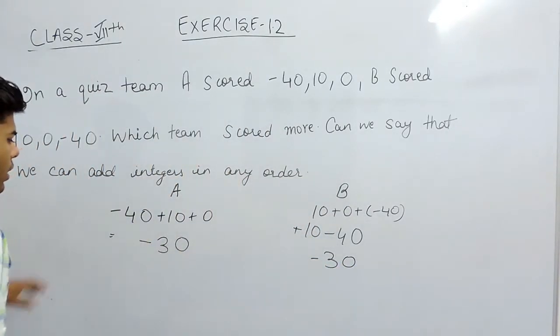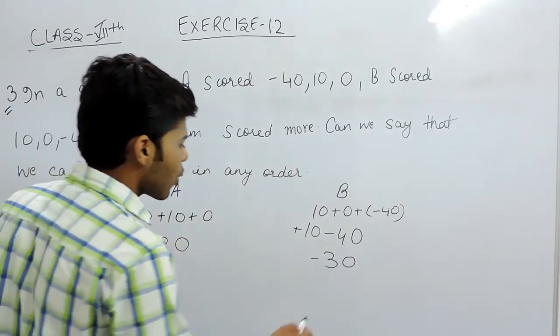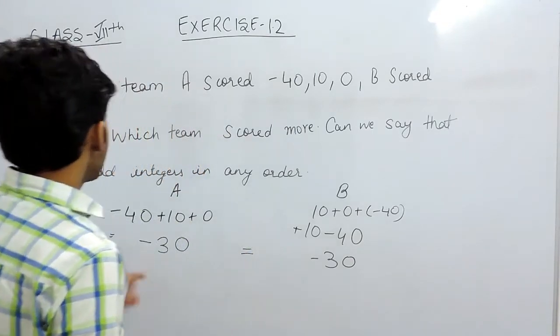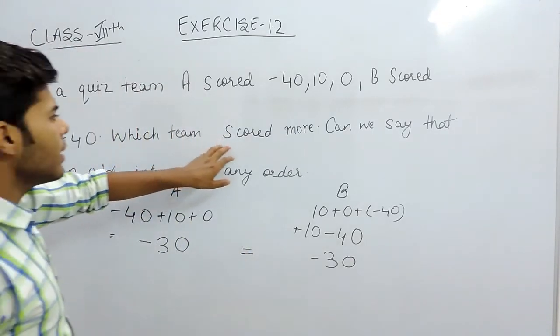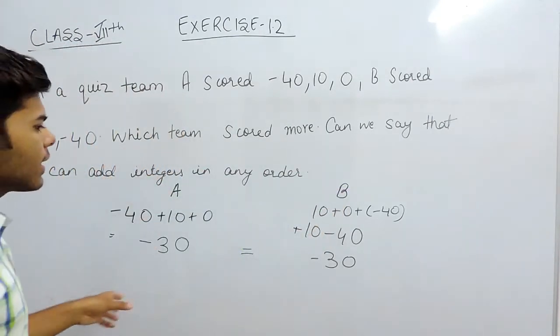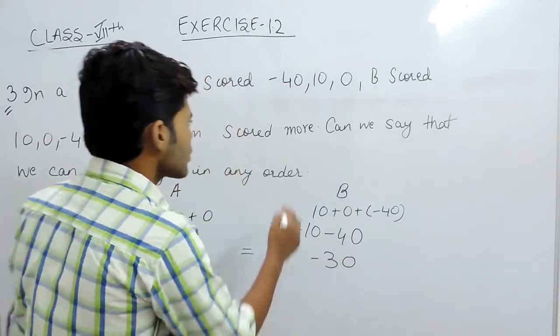These two teams are having equal number of scores, minus 30 and minus 30. So neither team among A and B has a score more than the other one. They are having equal marks. Now first part is solved.